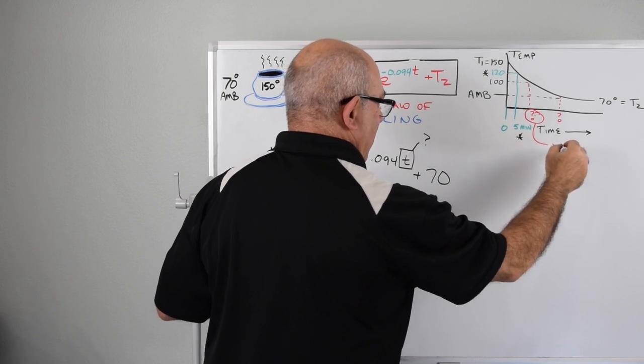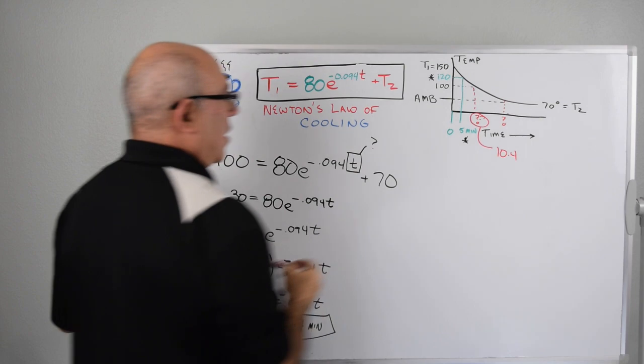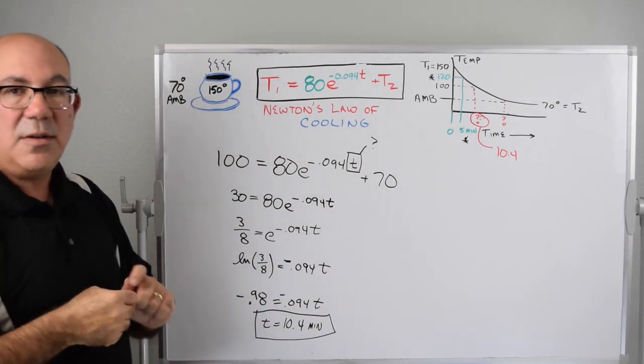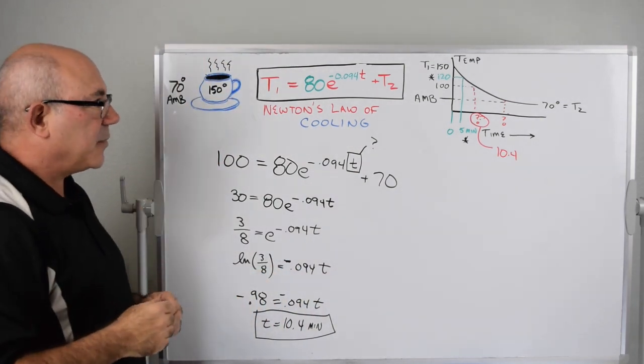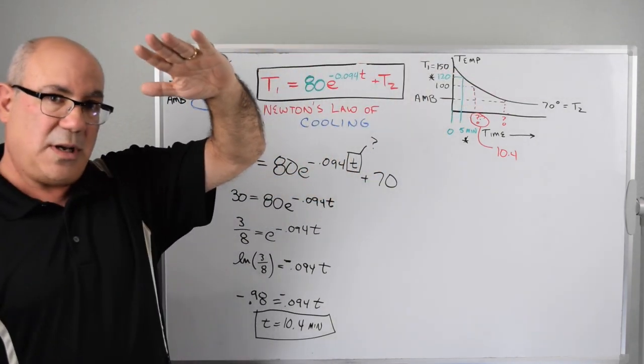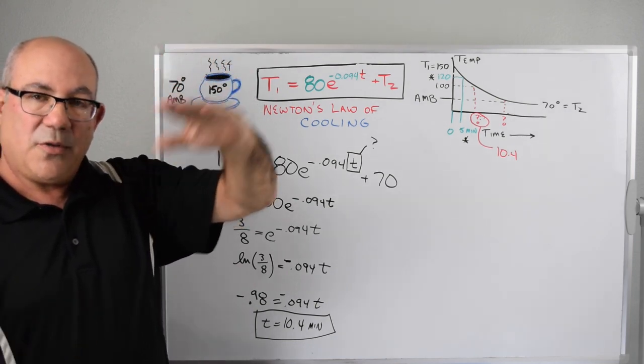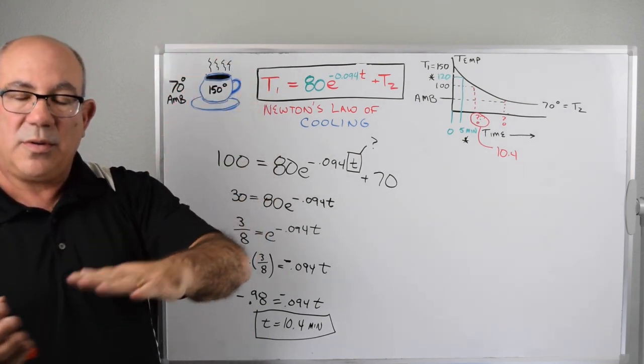So t equals 10.4 minutes. All of these constants were worked with minutes, so we know this comes out to be minutes. After 10.4 minutes it's down to 100. After five minutes it was down to 120, so you can see the temperature is slowing down because the difference between the ambient temperature and the temperature of the coffee is getting smaller. That means it slowly cools slower and slower.